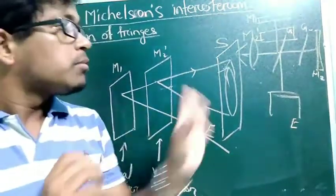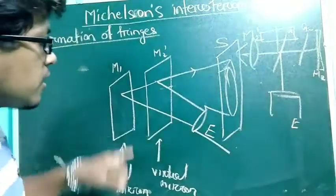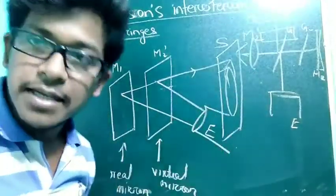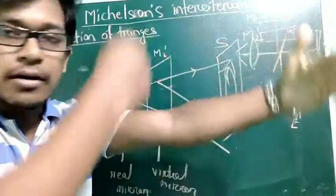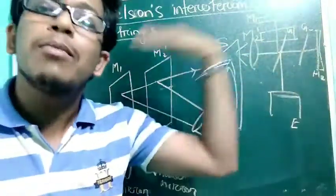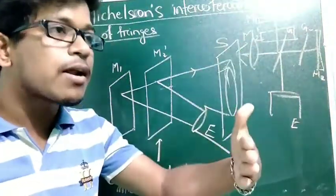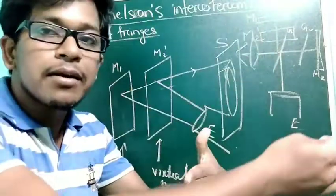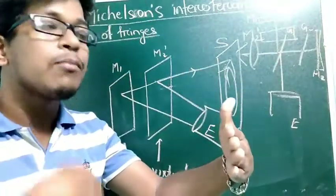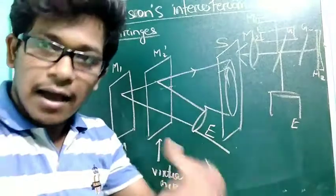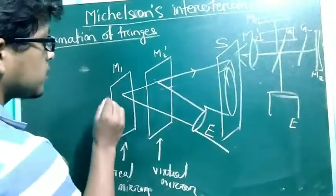Now forget everything and just consider: we have two mirrors and one object. I am standing in front of two mirrors, so I will have two images. For the first mirror I will have one image, and for the second mirror I will have another image.